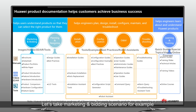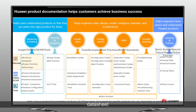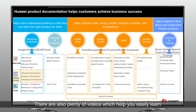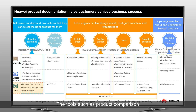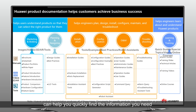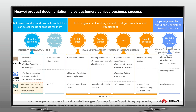Let's take the marketing and bidding scenario as an example. You can find documents like brochures, datasheets, product portfolio, and white papers. There are also plenty of videos, which help you easily learn about our products, features, and hardware. Tools such as product comparison, hardware configuration, and feature query can help you quickly find the information you need.